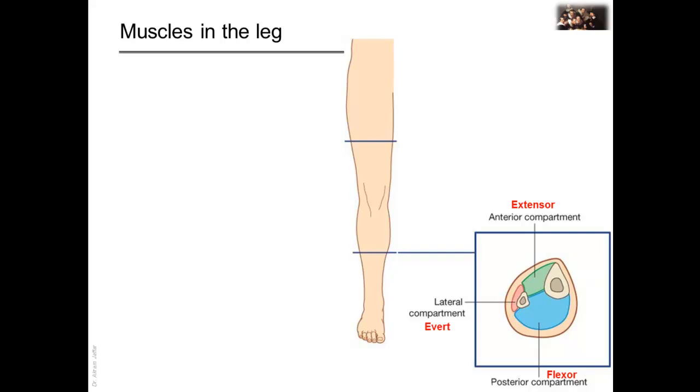In the leg, the muscles are divided into lateral, which is also called fibular, anterior, and posterior compartments. Muscles in the lateral compartment predominantly evert the foot. Muscles in the anterior compartment dorsiflex the foot, like tibialis anterior. Others also extend the digits, like extensor digitorum and extensor hallucis longus.